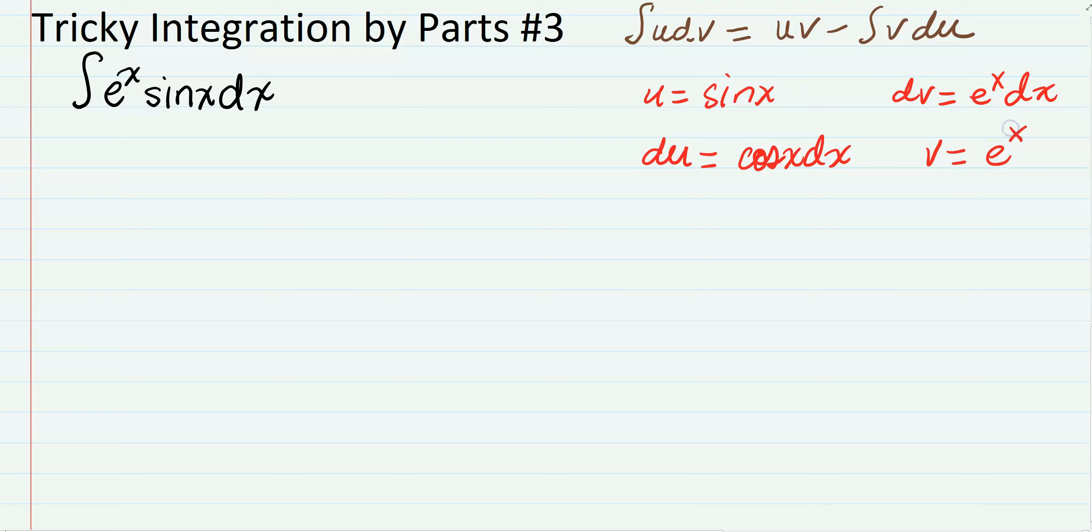So what you will have here is the integral of e to the x cos(x) dx is going to equal u times v, that would be e to the x sin(x) minus the integral of